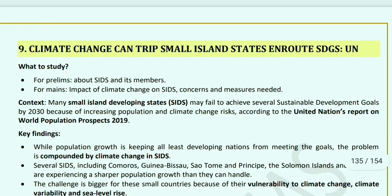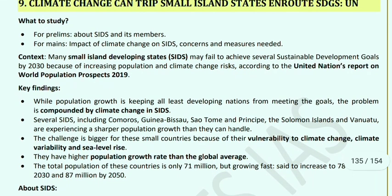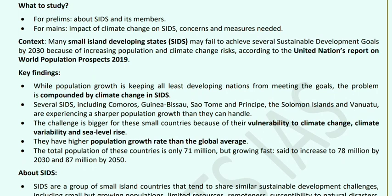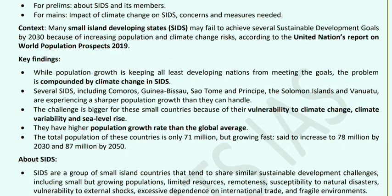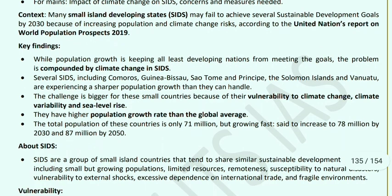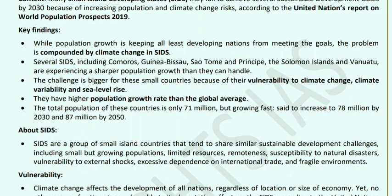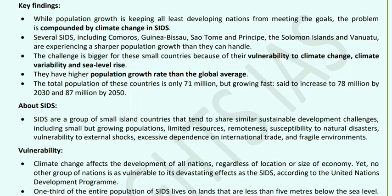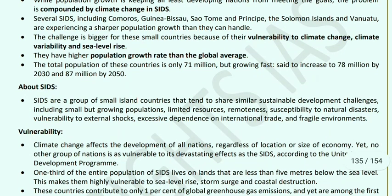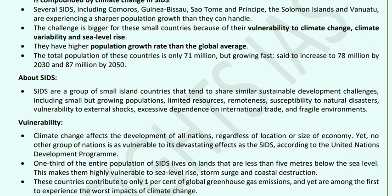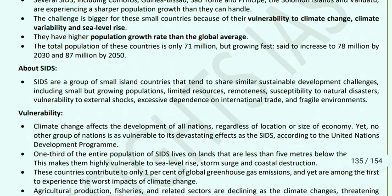Climate change can trim small island developing states' (SIDS) route to SDGs. Countries like Comoros, Guinea-Bissau, São Tomé and Príncipe, Solomon Islands, and Vanuatu are facing urban population growth they cannot handle. Climate change, climate variability, sea level rise, and higher-than-average population growth are key challenges. These countries' total population is 71 million but is expected to grow to 78 million by 2030 and 87 million by 2050.